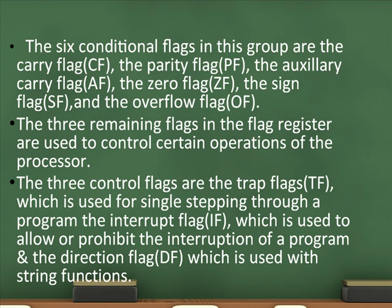The three control flags are: the trap flag TF, which is used for single stepping through a program; the interrupt flag IF, which is used to allow or prohibit the interruption of a program; and the direction flag DF, which is used with string functions.